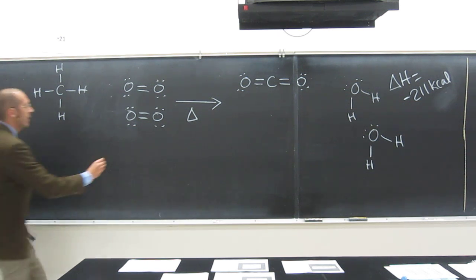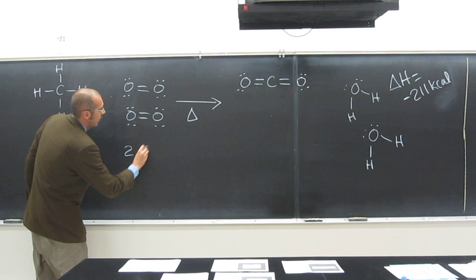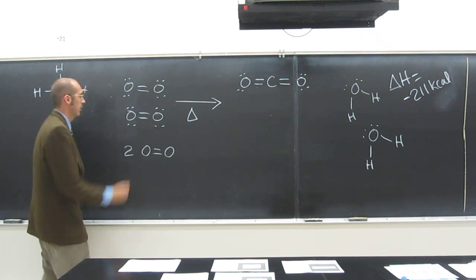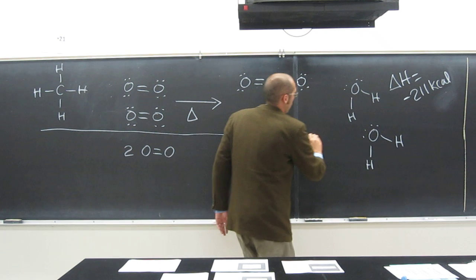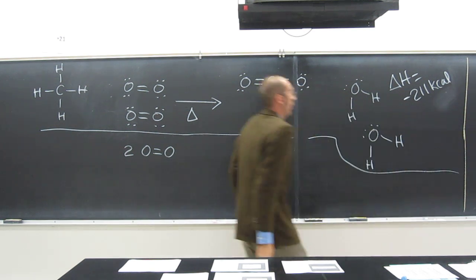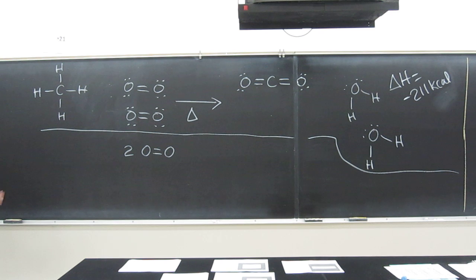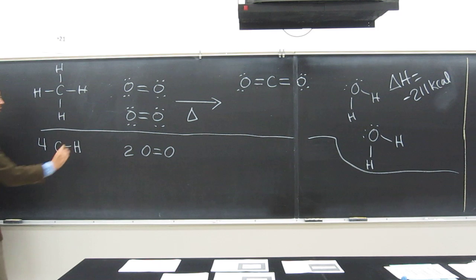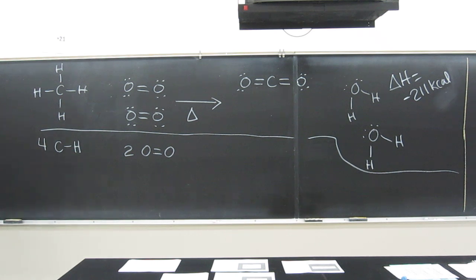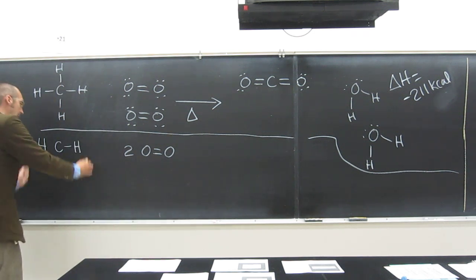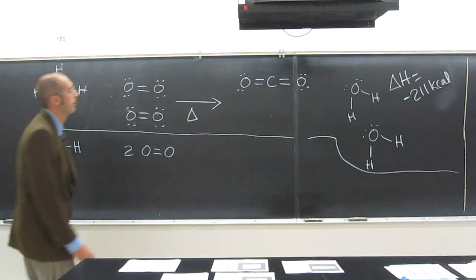So we could say we got two oxygen-oxygen double bonds. Let's just put a line down here so we can tally up these things. Do we have any other types of bonds up there? Four CH bonds. Yeah, so four CH bonds. I just want you to write things like this because it's kind of just to tally everything up. In fact, you didn't even have to write them underneath those. It would probably be better to just write them all in one.